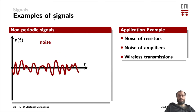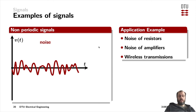Noise is a non-periodic signal — if any signal can be described with a frequency or periodicity, it cannot be noise. There is white noise from resistors, 1/f noise in amplifiers, and cosmic noise in wireless transmissions. A Bluetooth connection disturbed by a nearby mobile phone is not noise, because both signals actually have a periodicity — they have a period and are disturbing each other.